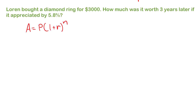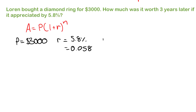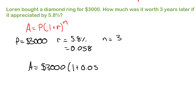Writing down what we know: the present value of the ring is three thousand dollars, the interest rate is five point eight percent, which as a decimal is zero point zero five eight, and we're waiting three years. So the future value equals three thousand times one plus zero point zero five eight to the power of three. That comes out to three thousand five hundred and fifty two dollars and eighty six cents.